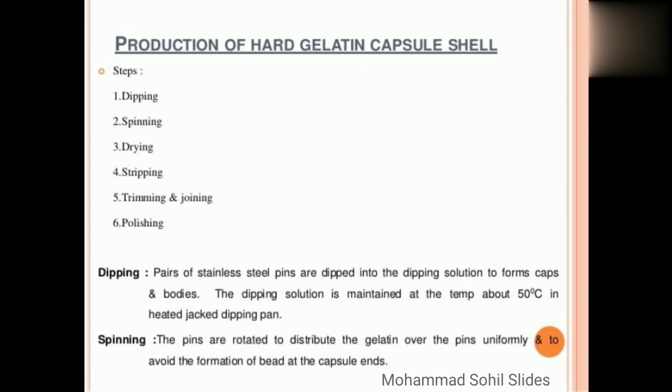Let's discuss one by one. First is dipping: pairs of stainless steel pins are dipped into the dipping solution to form caps and bodies. The dipping solution is maintained at the temperature about 50 degrees Celsius in heated jacket and dipping pan. Then second, spinning: the pins are rotated to distribute the gelatin over the pins uniformly and to avoid the formation of bead at the capsule ends.